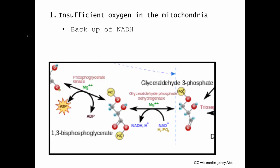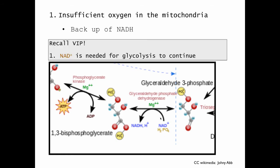As you'll recall from the introductory videos, what's absolutely essential for glycolysis to continue is the presence of NAD. So recall our very important point: NAD is needed for glycolysis to continue. And if we have an excess of NADH, that means there's no longer sufficient NAD for glycolysis to continue.